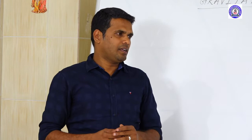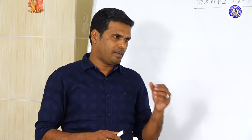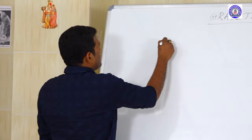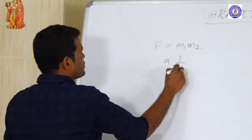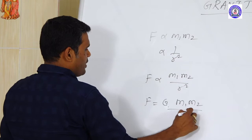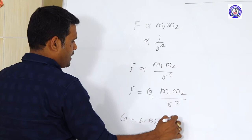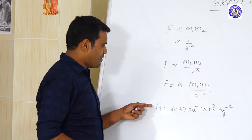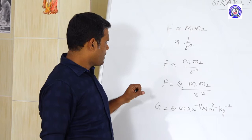The very basic fundamental is Newton's laws in explaining gravitation. Newton's law of gravitation states that every particle or every object in the universe attracts every other object, which is directly proportional to the product of their masses and inversely proportional to the square of the distance between them. So F is proportional to M1 times M2 divided by R square. The proportionality constant is G, so F equals G M1 M2 divided by R square. The value of G is 6.67 × 10⁻¹¹ N·m² kg⁻².